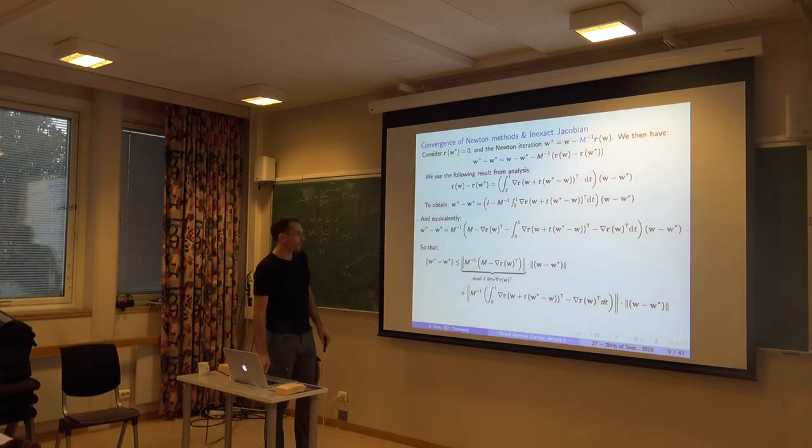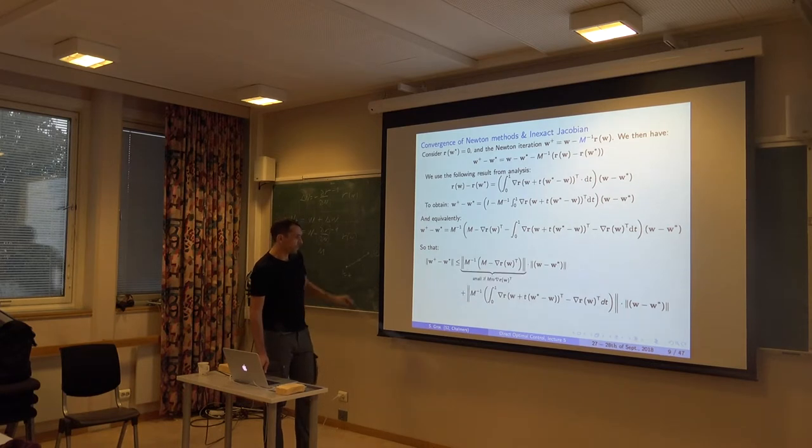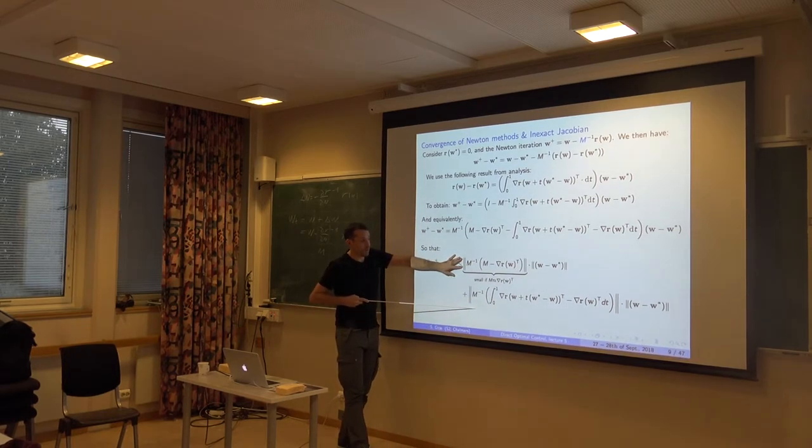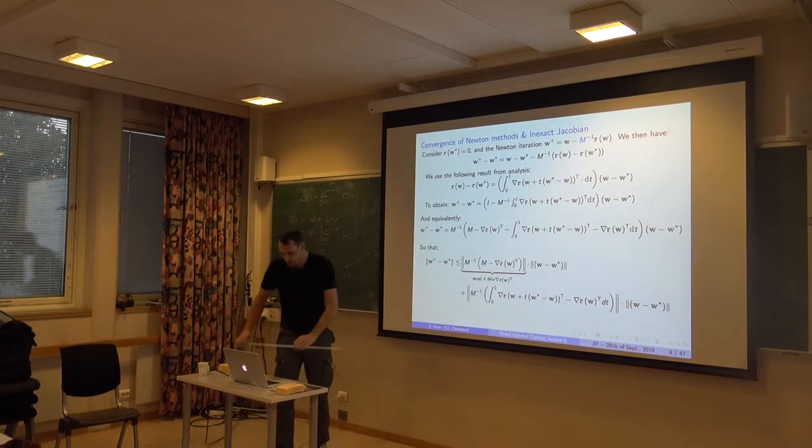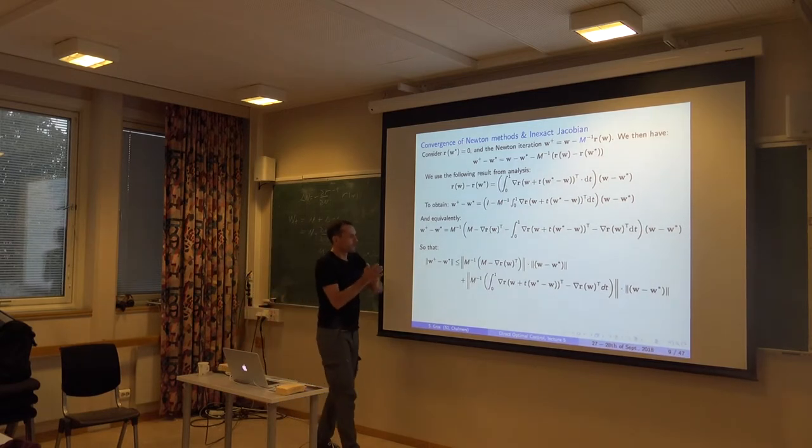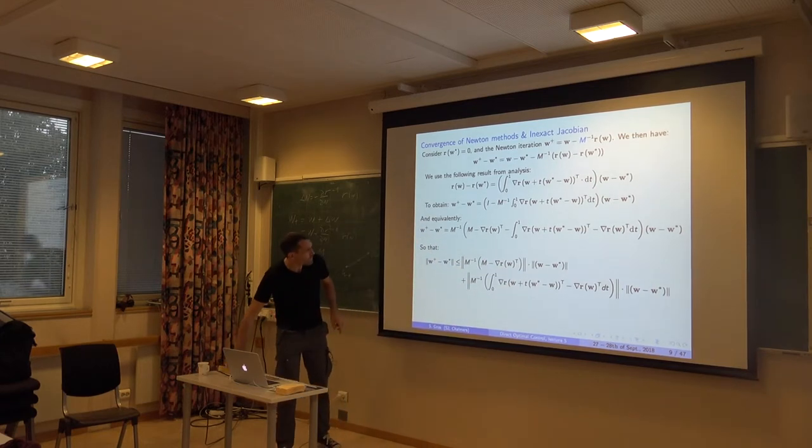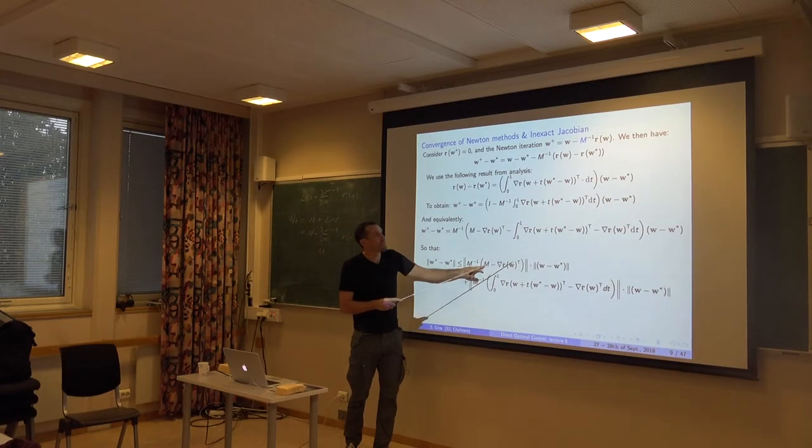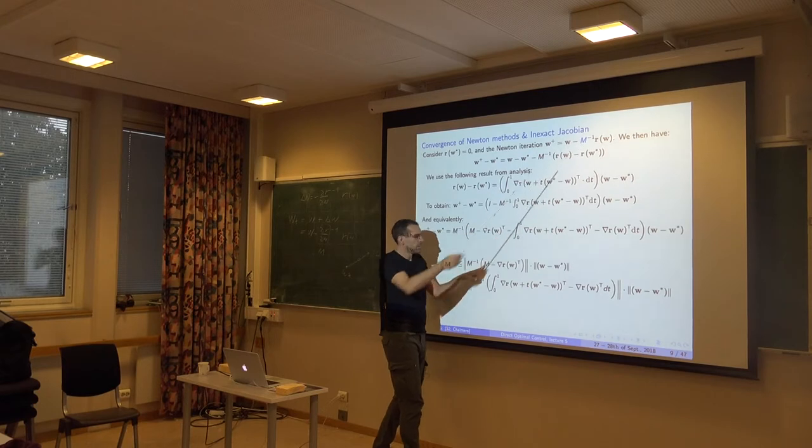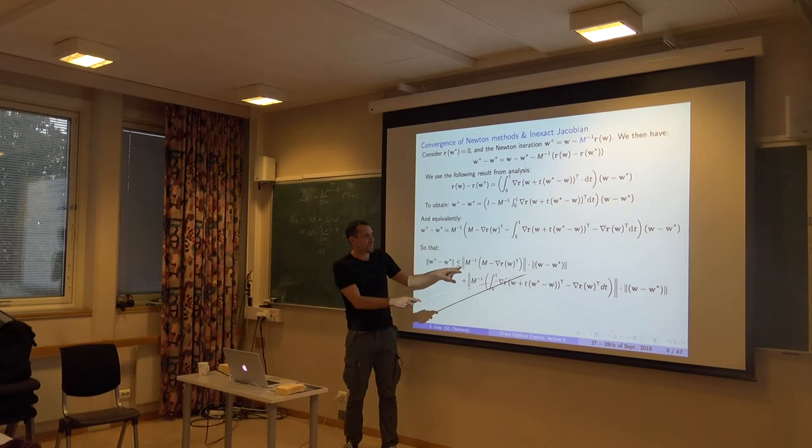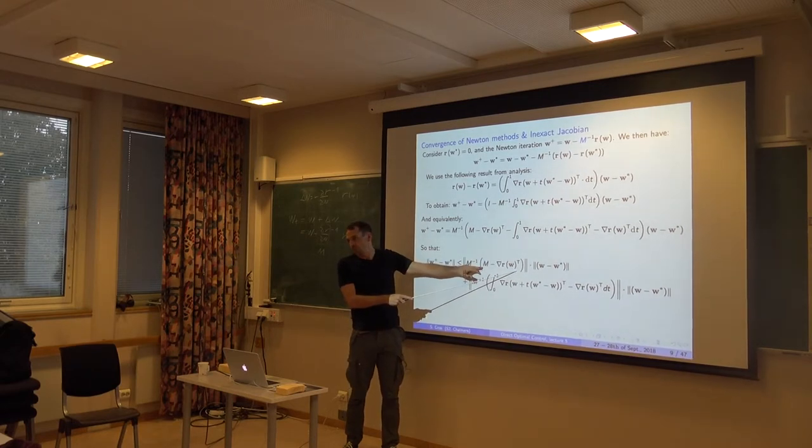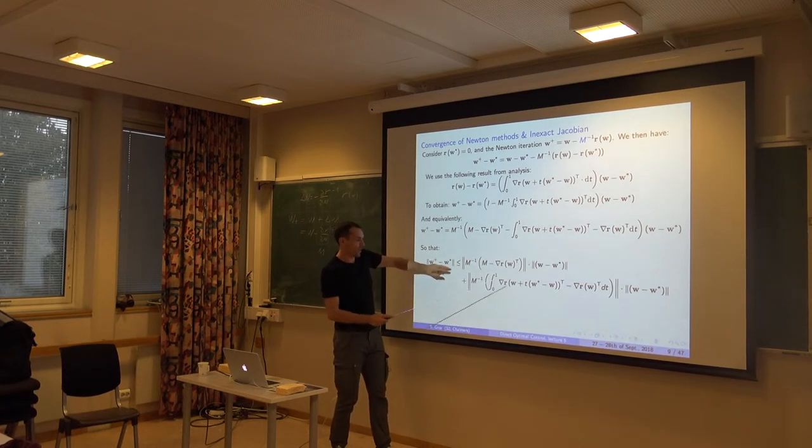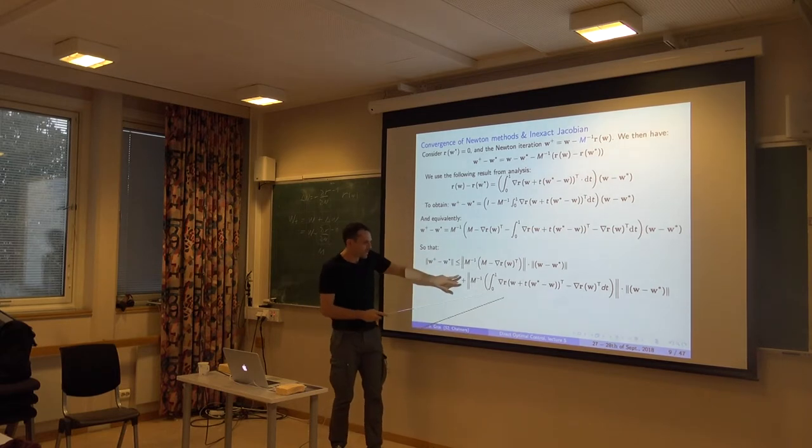And yeah, essentially you end up with an expression like this. That essentially, that's an inequality that relates how close the next step, the W plus, will be from the true W star. The one you're looking for compared to how close you are before. So that's where you start. That's your next step. And you relate the distance of the next step to the true solution to the previous one you had. And you have now this nasty expressions that relate these things. Does it make sense? Yeah. Take that offline if you're interested. If one day you need to investigate the convergence around this kind of methods, it can be very useful to understand these things. Otherwise you can probably trust it. What happens then is you will basically try to put bounds on these things here. Essentially try to explicitly state how small they are supposed to be.